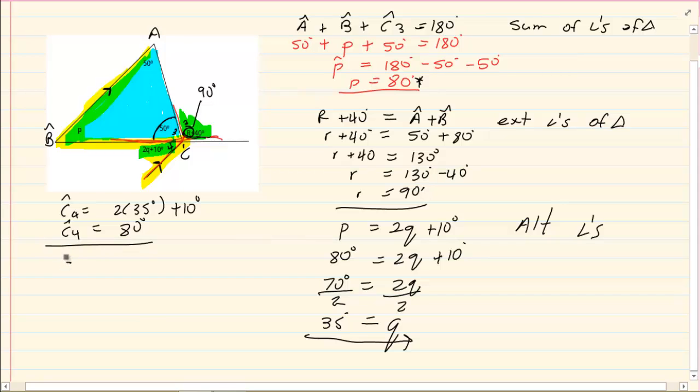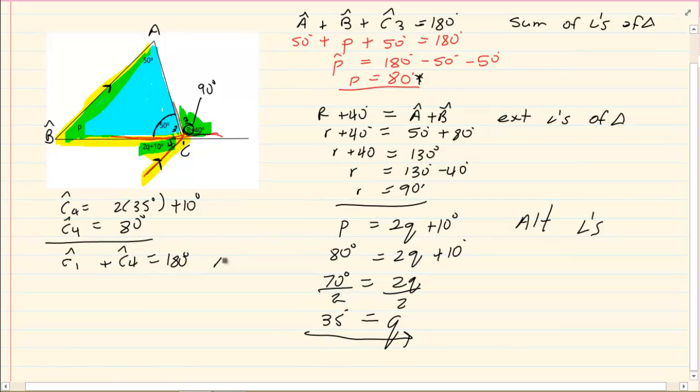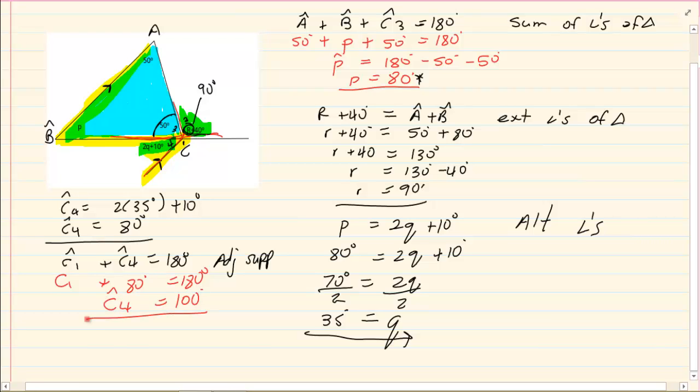What would C1 equal to? C1 plus C4 is going to equal to 180 degrees. Why? Adjacent supplementary. That means I have got C1 plus 80 degrees is equal to 180 degrees. That means C4 is equal to 100 degrees. That is why you need to know all your rules. Some of the rules are very dependent on the other rules. Without them, we can't complete the riders. Thank you for watching.